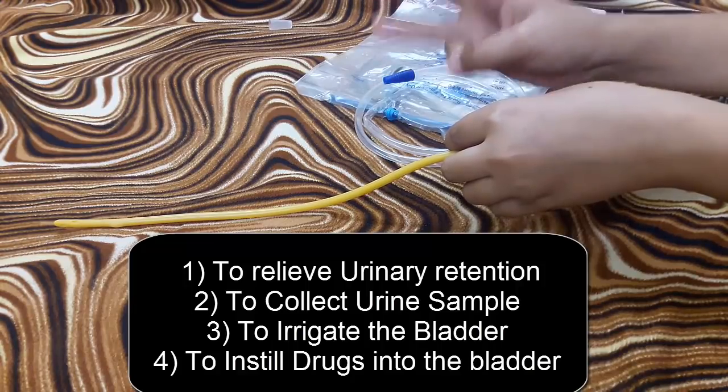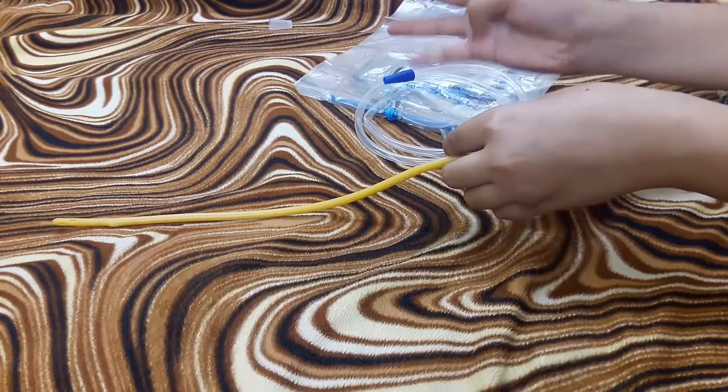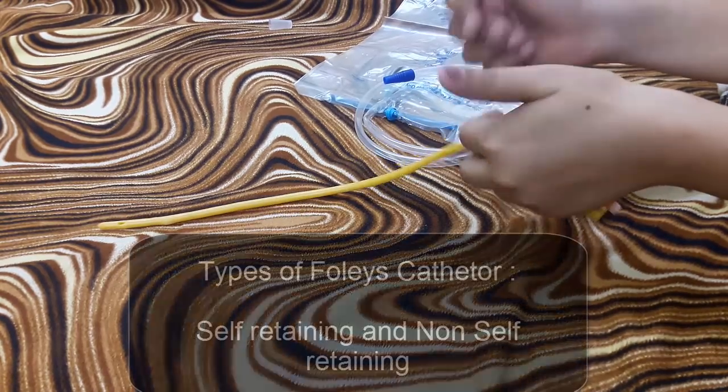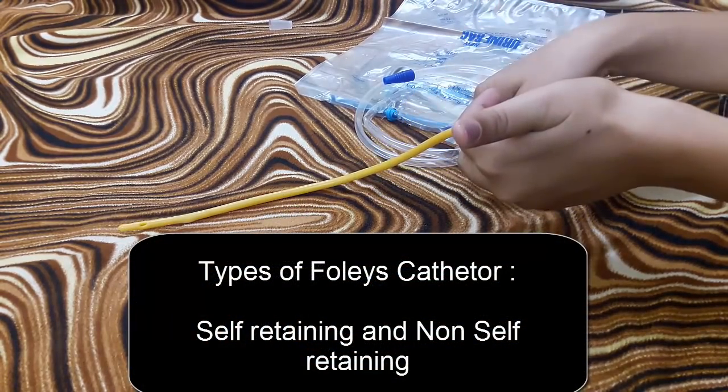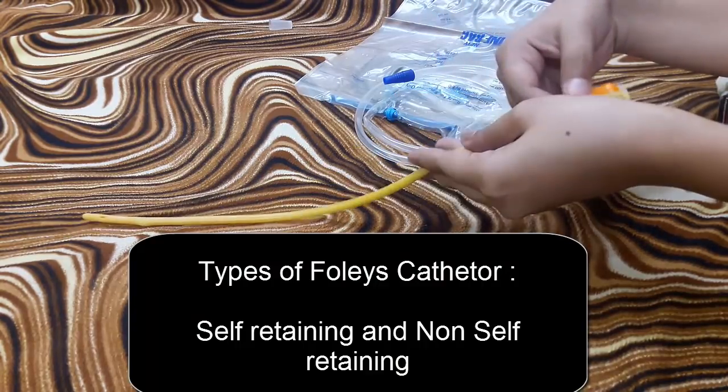There are different types of catheters, for example, non-self-retaining and self-retaining catheters. This is a Foley catheter and it is a self-retaining catheter.